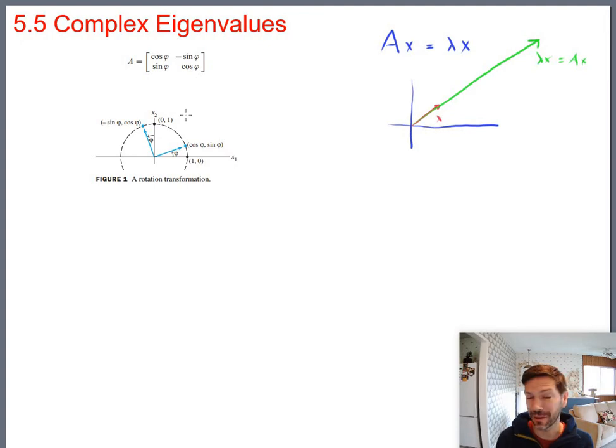So I'd like to point out that a rotation matrix has no eigenvectors. No real eigenvectors anyway. Because what would a rotation matrix do to any vector, any point? It never lengthens it or shortens it. It always just rotates it.